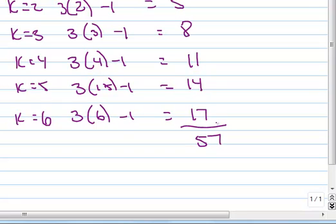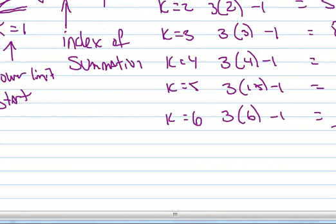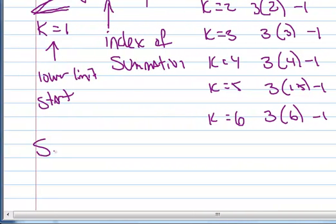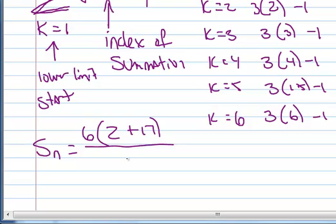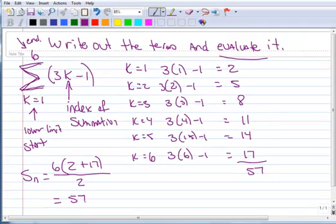Or you could realize that this is arithmetic series. So we could sum it up using the summation formula. So we have 6 terms. So n is 6. Our first term is 2. Our last term is 17. And we divide by 2. And of course when you do that, you get 57.